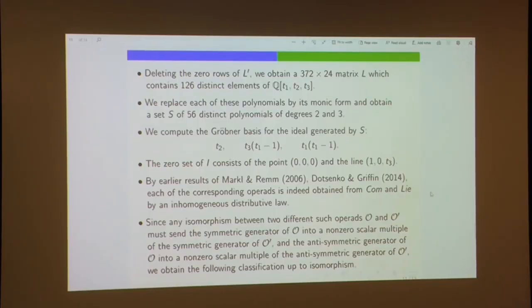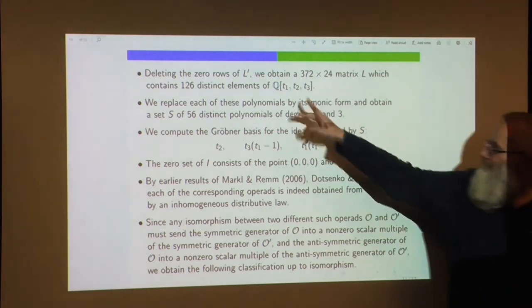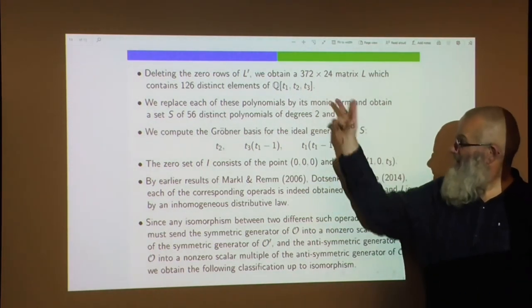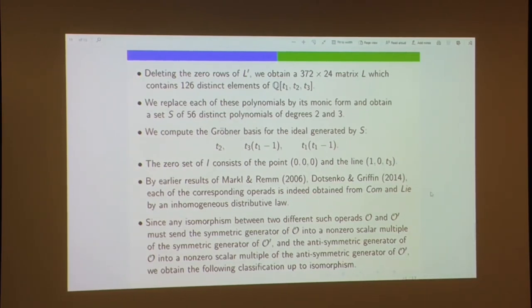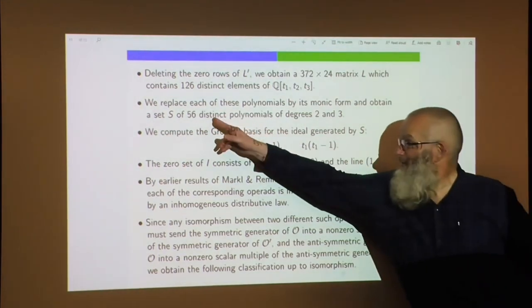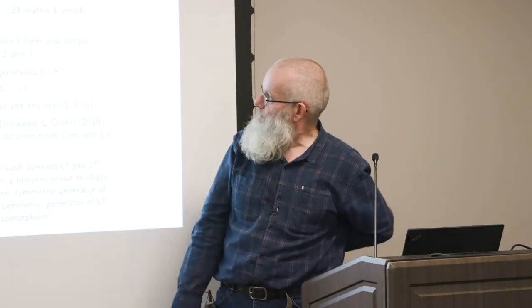Since we want all 126 polynomials to be zero simultaneously, we can replace each by its monic form, giving 56 distinct polynomials — all of degrees two and three. We then compute a Gröbner basis of these 56 polynomials in three variables with respect to a basic monomial order, and it turns out to be a very nice simple Gröbner basis.